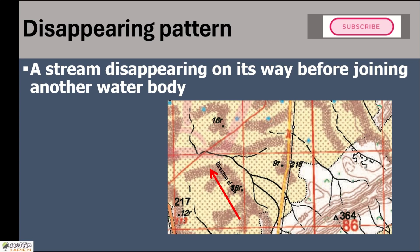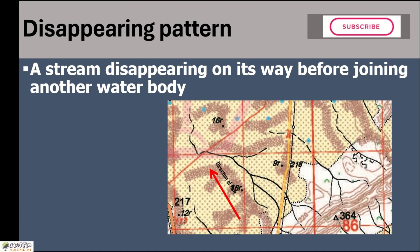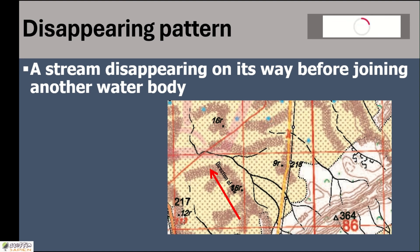All these rivers are disappearing streams. They are starting from the mountain range in the south, flowing towards the north and northwest, but they are disappearing in between. We can see the presence of sand dunes as well as flat sands, so they are moving through sandy areas and disappearing. Such streams are called disappearing pattern or disappearing streams.